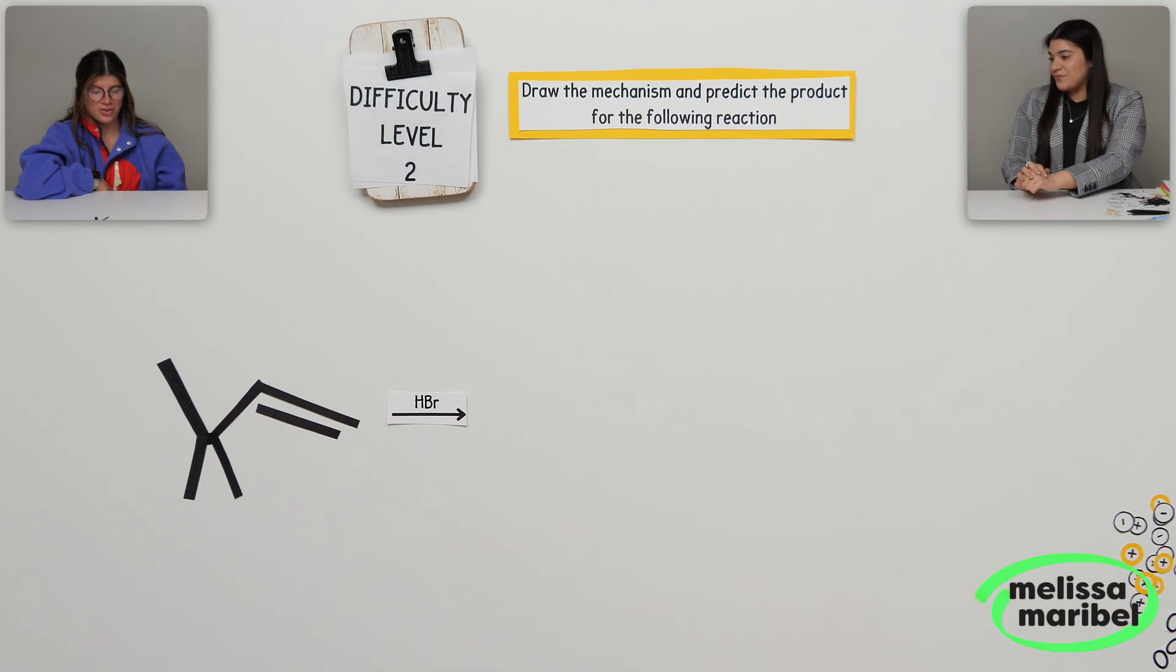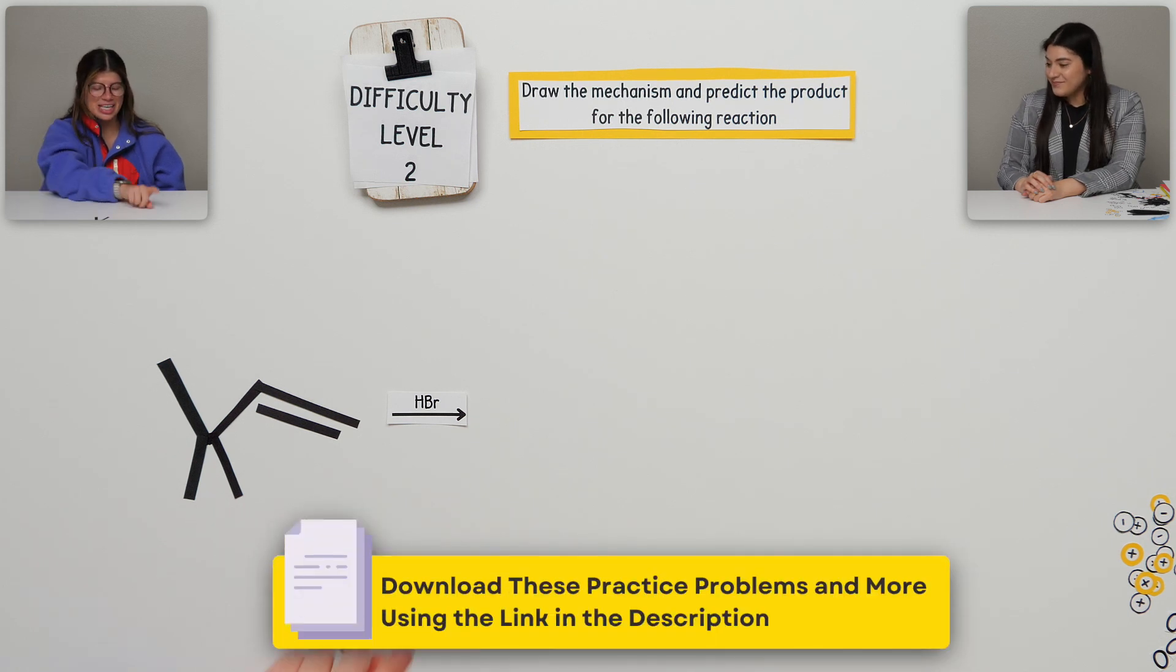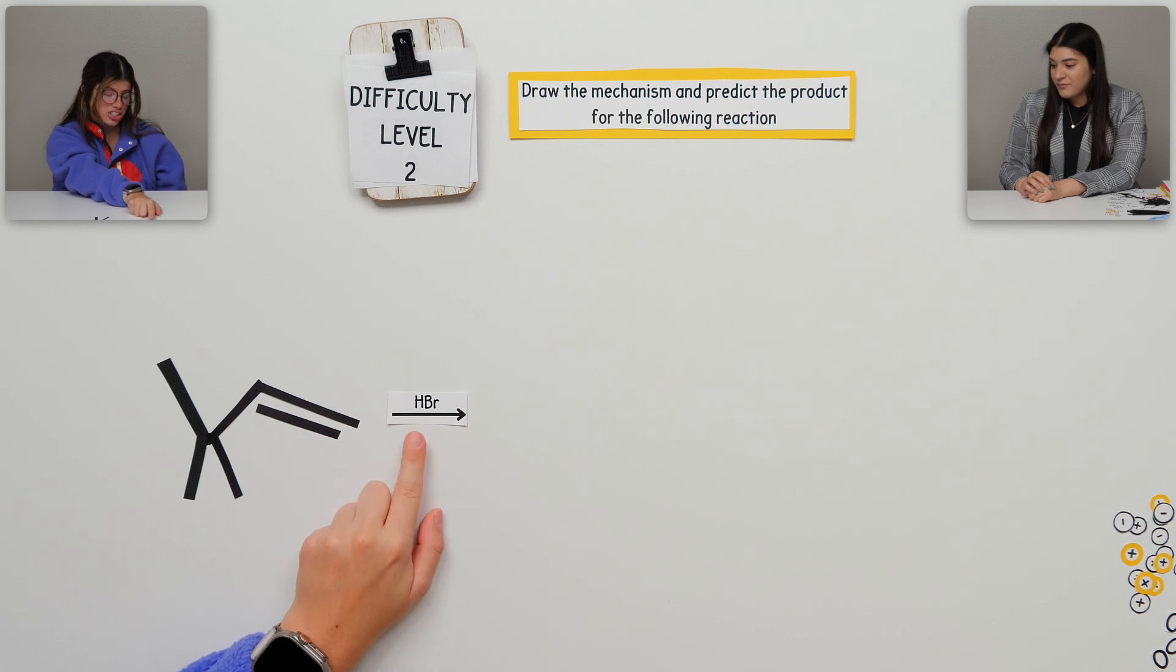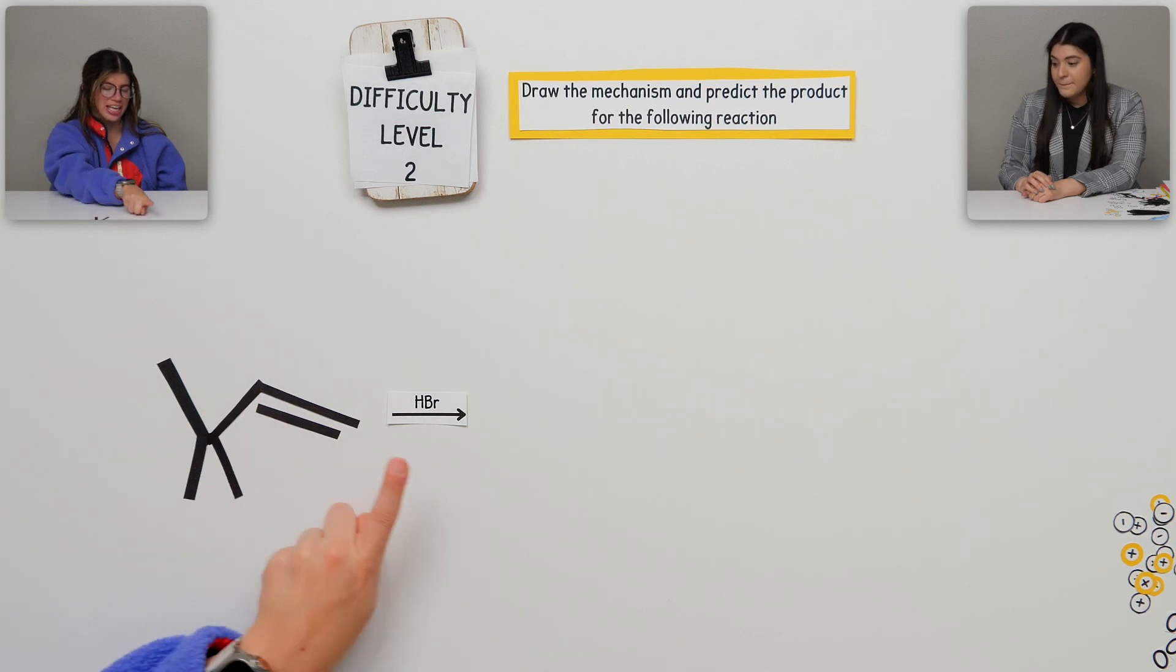What happens in this reaction? So we have our, it's still Markovnikov's rule. But this time instead of like the OH or the alcohol, it'd be the halogen, the Br bromine, would go to the most substituted carbon. And then the hydrogen, just the same, would go to the least.